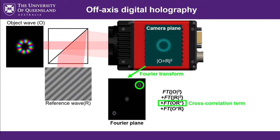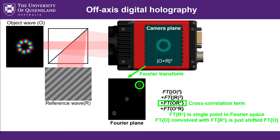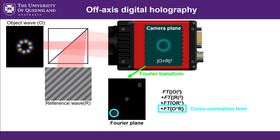The other two terms are the cross-correlation between the object wave and the reference wave — the Fourier transform of R* multiplied by O. Multiplication becomes convolution in the Fourier plane, so that term is the Fourier transform of O convolved with the Fourier transform of R conjugated. But the Fourier transform of a plane wave is just a single point in Fourier space, so that term is simply the Fourier transform of the object wave shifted in Fourier space to the position corresponding to the angle of the reference wave. There is also a conjugate term at the 180-degree rotated position in Fourier space — a consequence of the Hermitian symmetry you get when Fourier transforming a real-valued function like an intensity-only camera image.